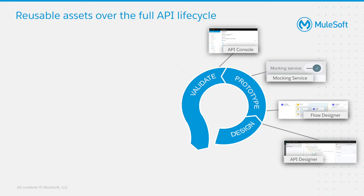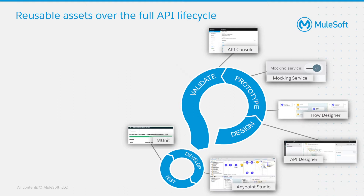After publishing the API specification to Anypoint Exchange, you will most likely want to start implementing your API. In this step, your developers will search for the specification in Anypoint Exchange and then import the specification into Anypoint Studio. Anypoint Studio will then create a scaffold of your API based on the RAML.